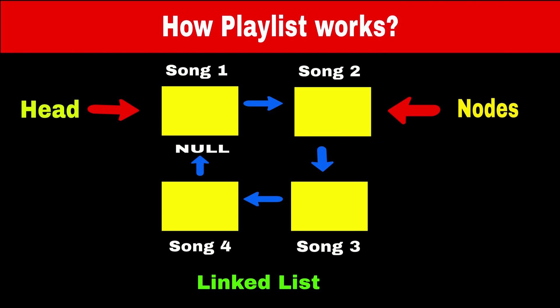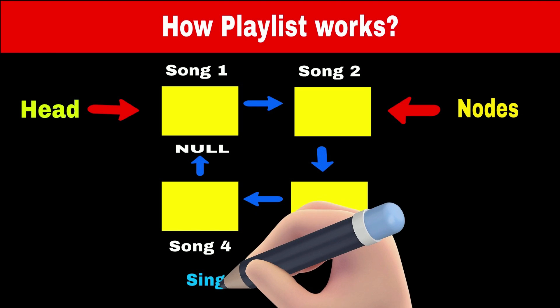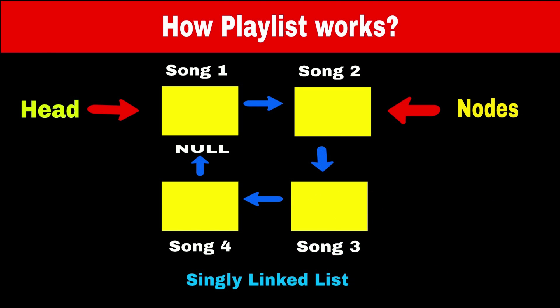The last node in the list points to null. In our current list, every node points to a single next node, so this linked list is called a singly linked list. Now imagine you are on song 4 and want to go back to song 3. In a singly linked list, we have to traverse the entire list again from the head node to the third song, which is time-consuming.